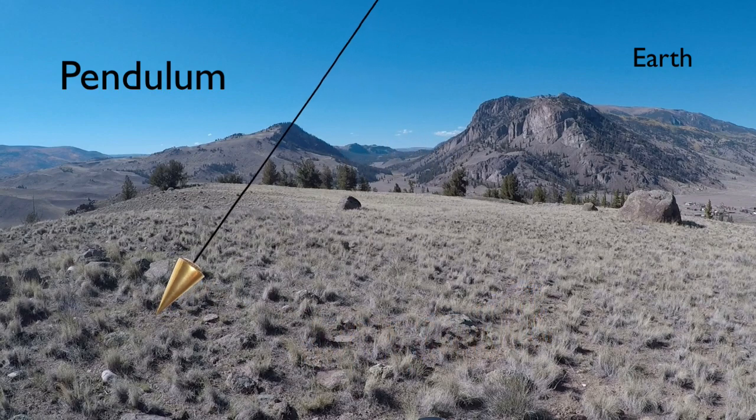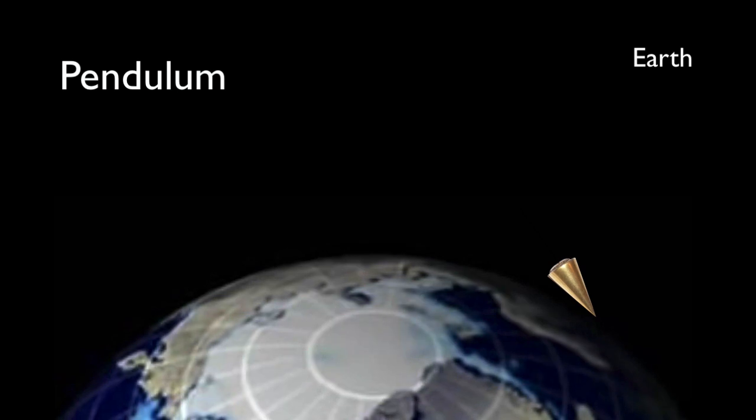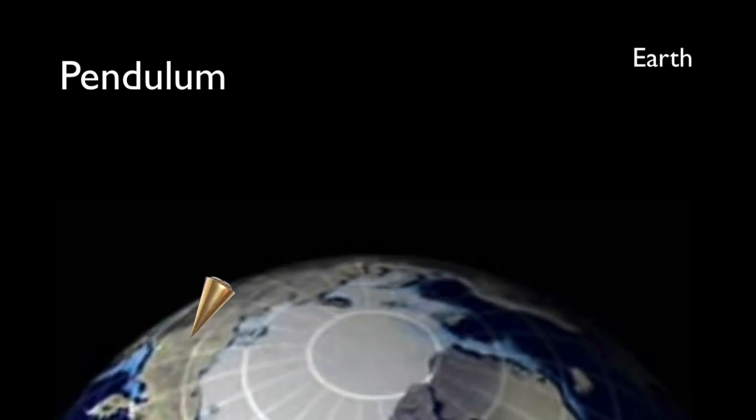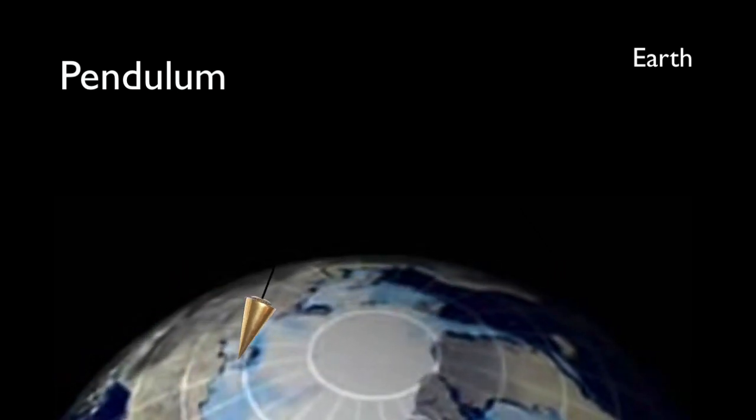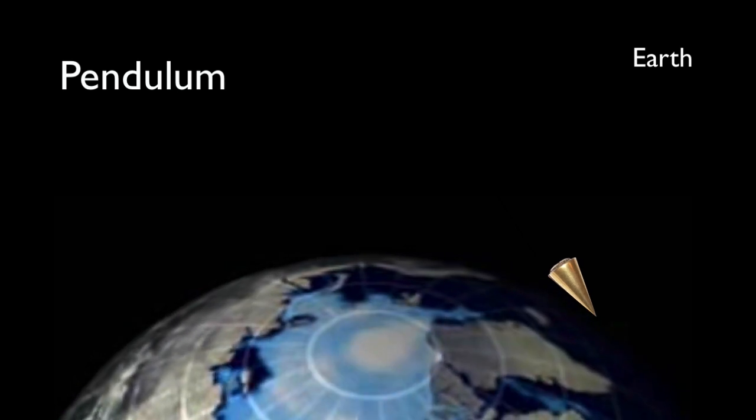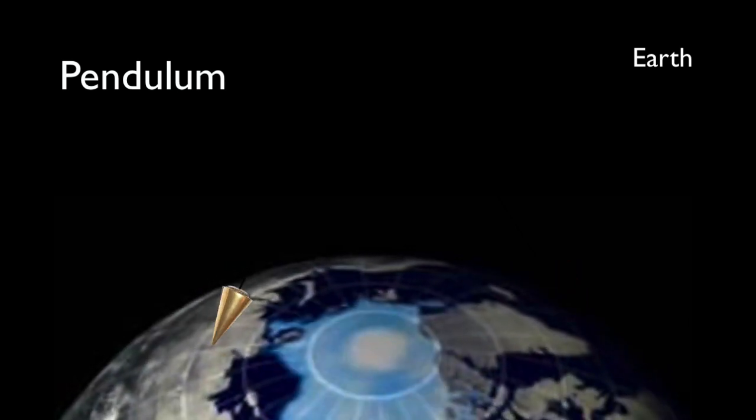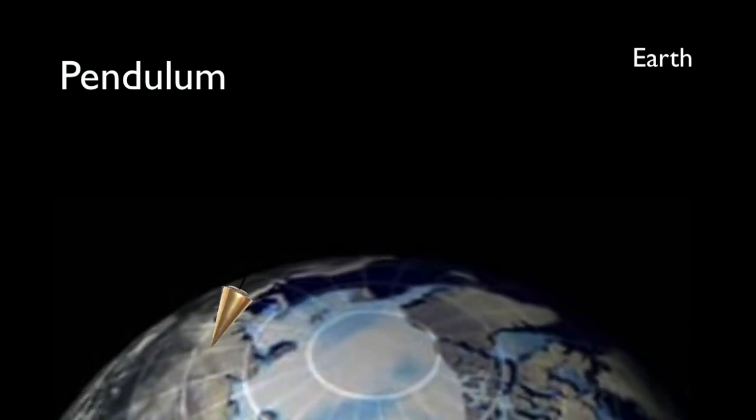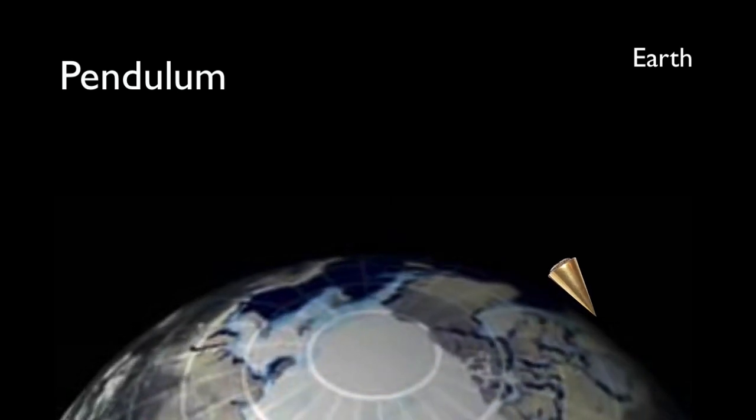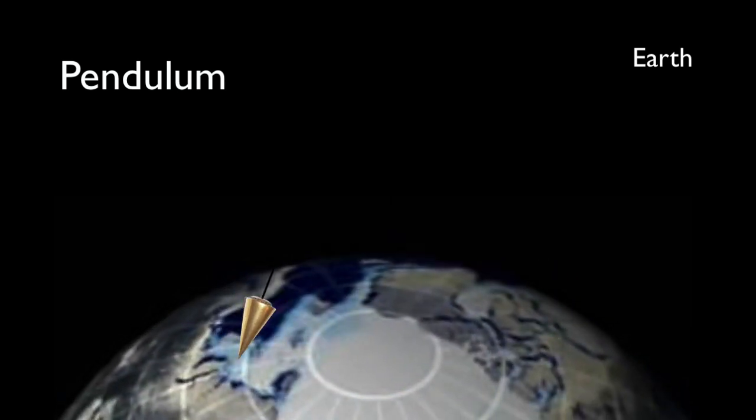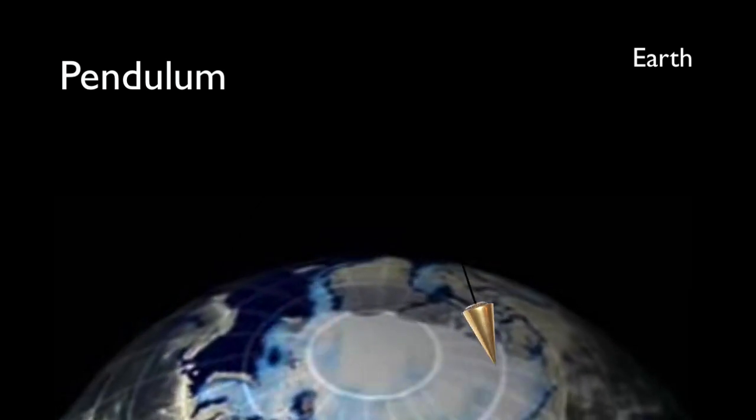Swing a pendulum at the North Pole. Inertia keeps it swinging in the same direction, even as Earth rotates beneath it once every 24 hours. Because motion is relative, from your point of view sitting at the North Pole, it looks like the pendulum is shifting around once every 24 hours.